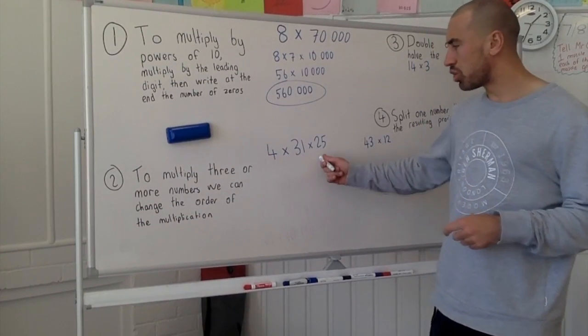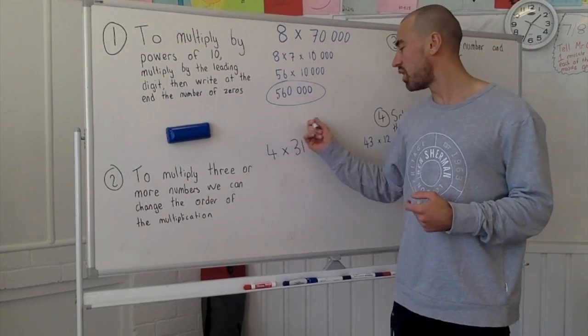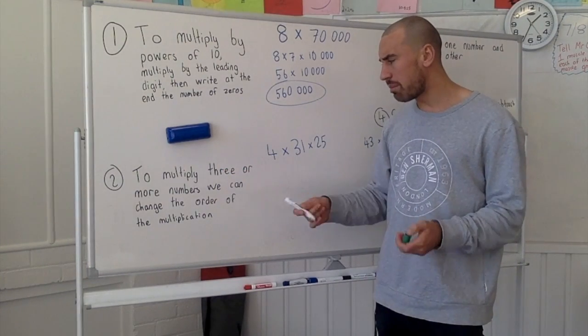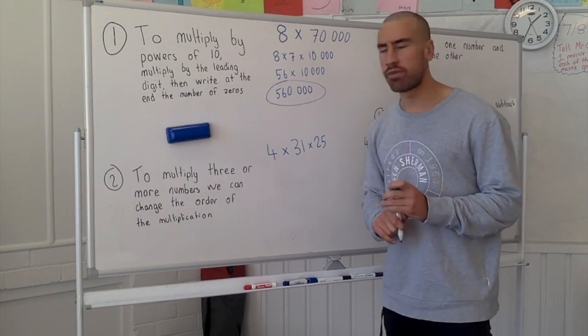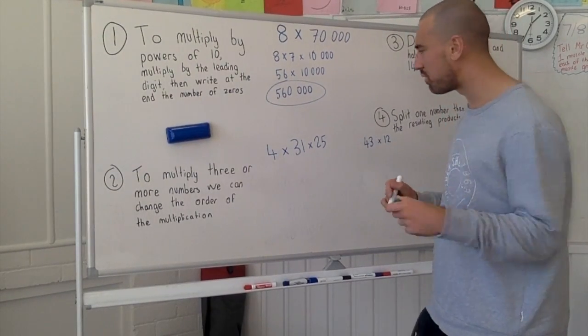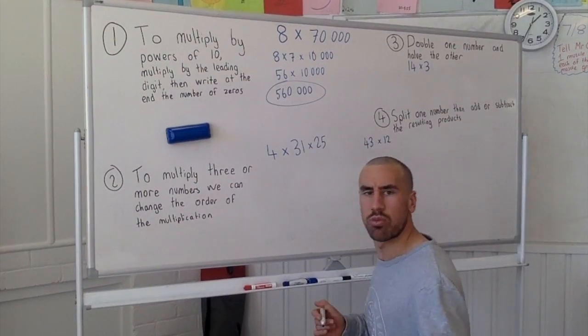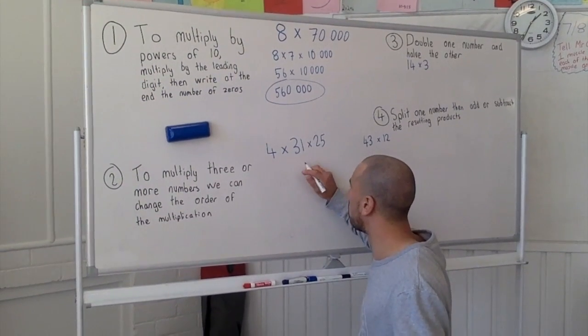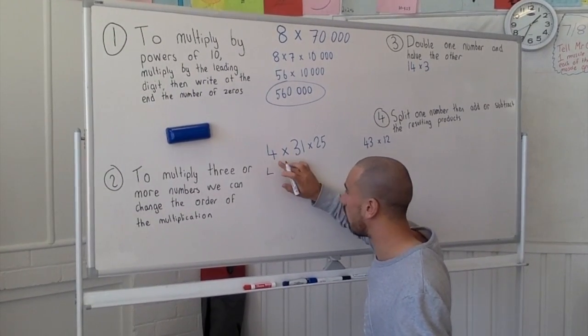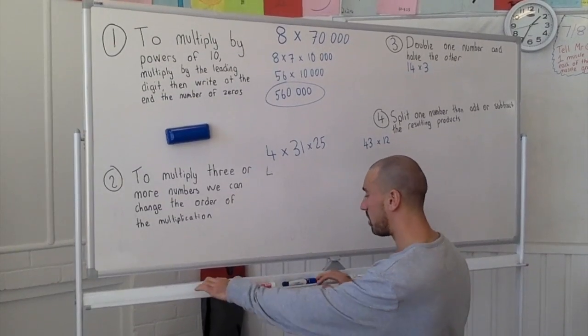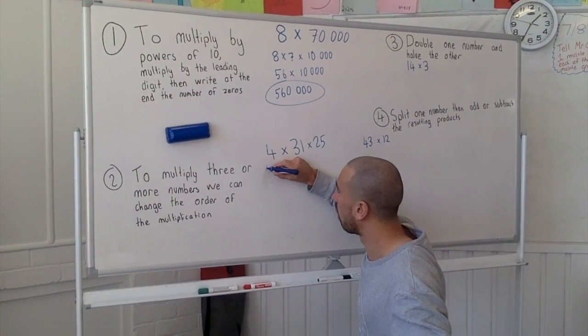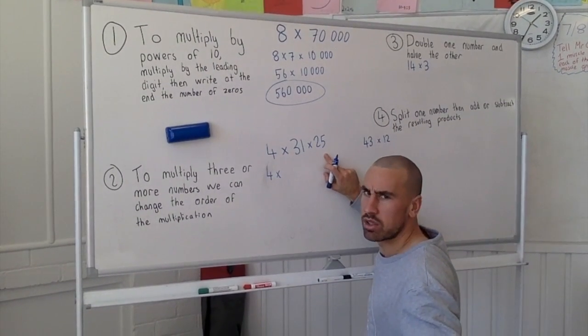Alright, strategy number 2. 4 times 31 times 25 is our problem, and our strategy is to multiply 3 or more numbers, we can change the order of the multiplication. Instead of going 4 times 35 then multiplying that by 25, what would be maybe a bit of an easier way for us to tackle this problem and rewrite this problem?